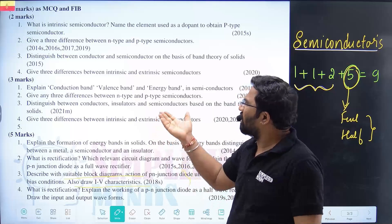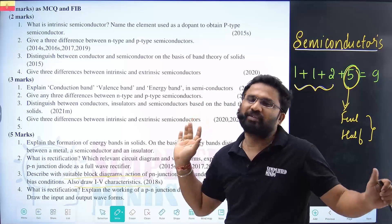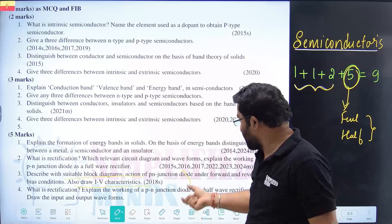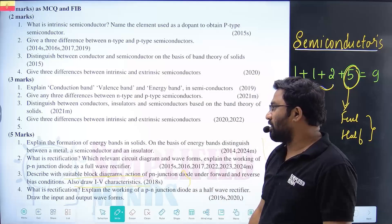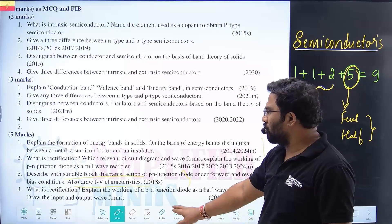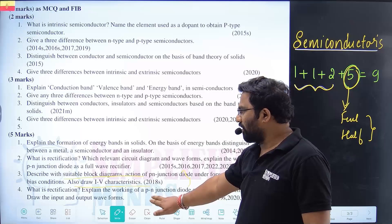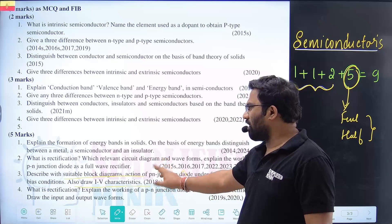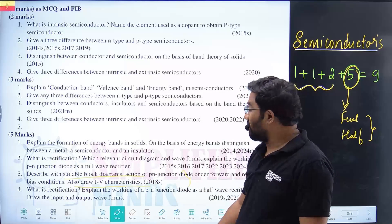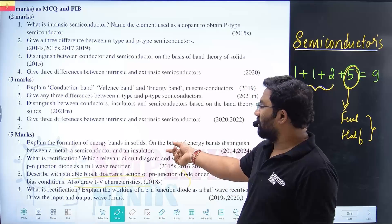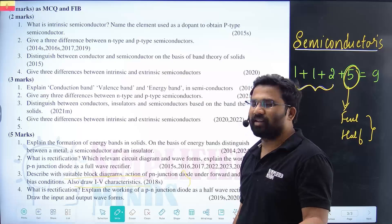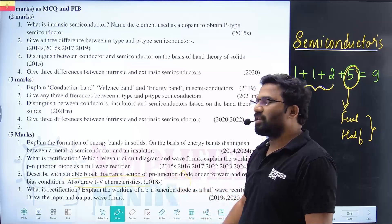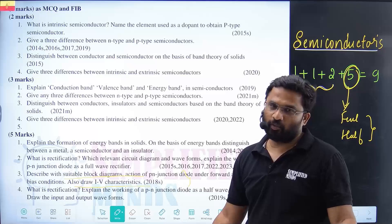That's why I can teach the entire chapter within 45 minutes for you. Most of the time, the five markers are for rectification — to explain the PN junction diode, full wave and half wave. If you study band energy theory, that covers the five markers too. But mostly, the five markers require full wave and half wave rectifier only.